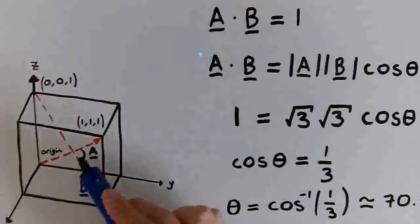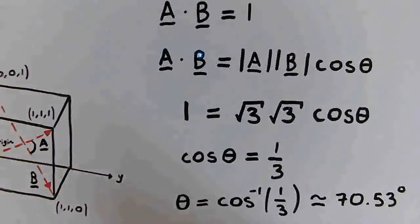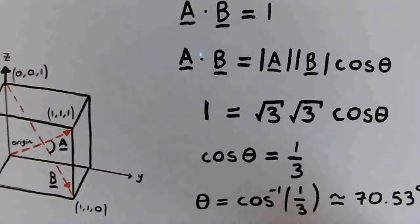Okay, so now we've found this angle here, which is the angle between the two body diagonals of a cube.